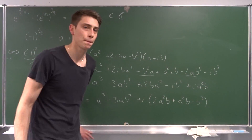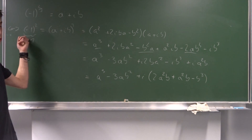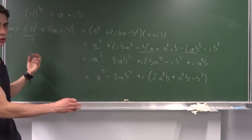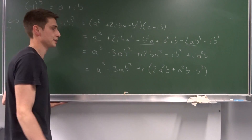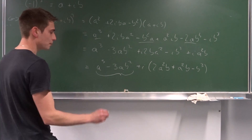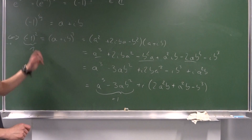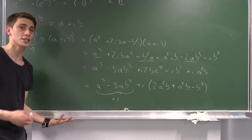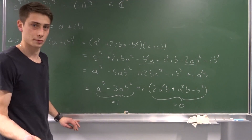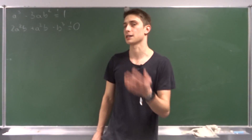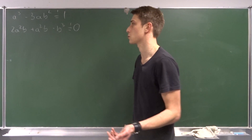Now we can compare. On one side we have a complex number, and on the other side we also have a complex number, and we want them to be equal. The left side is just one, which is a real number, so the real part equals one and the imaginary part equals zero. This gives us a system of equations: a cubed minus 3ab squared equals one, and three a squared·b minus b cubed equals zero.